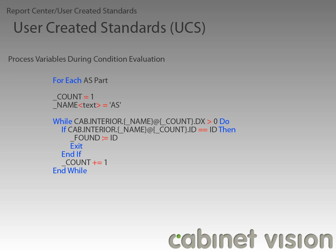What CabinetVision does, starting with version 8, is take any variable that is surrounded in curly brackets — like the variables in the path — and process them to see what the intended value should be before using the path. You can use this method of processing variables in many ways, and this was just a simple example. In fact, you can see in this very example that we use this functionality in an if-then statement as well.